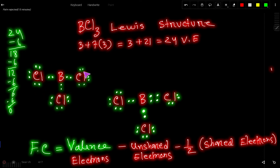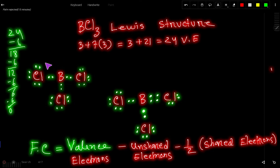Each chlorine atom has now fulfilled its octet. All three chlorines have a complete octet structure. However, boron only has 6 electrons around it. Actually, 6 valence electrons is acceptable for boron — it is an exceptional element. So this is the Lewis structure of BCl₃.